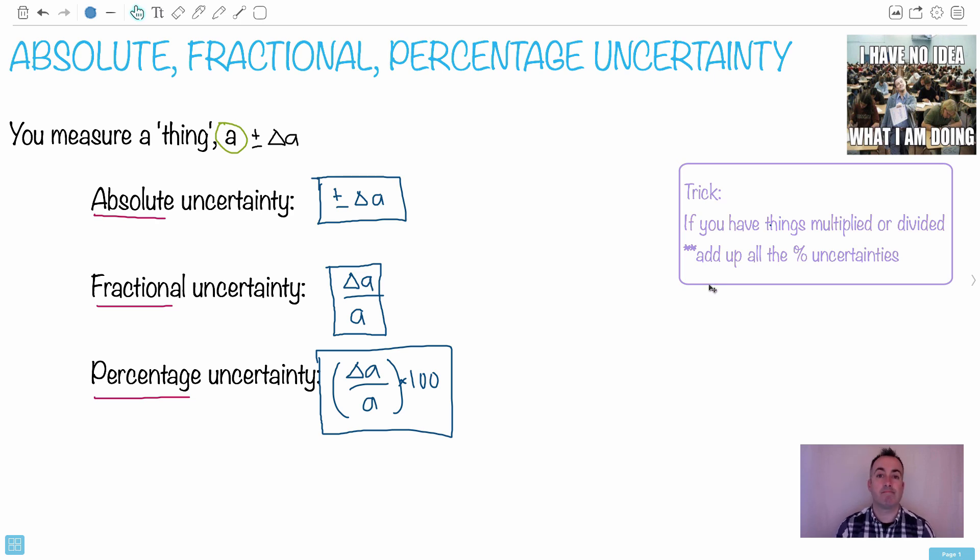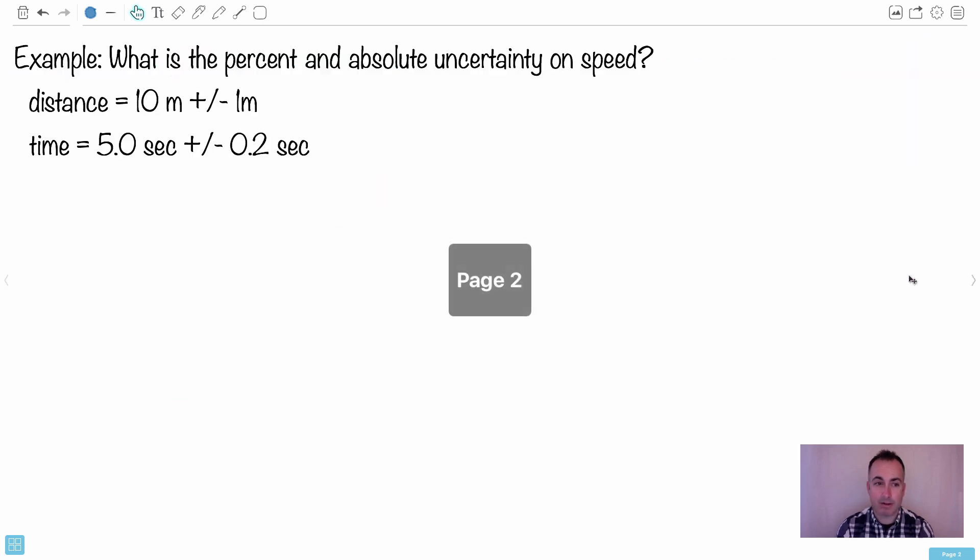So in this case, if you're measuring a distance and a time, let's just say, and you want to find the velocity, even though the velocity is the distance divided by time, or displacement divided by time if we're going to be really accurate about it, then what you can do is you can just find the percent uncertainties for each of them. You can find the percent uncertainty for distance and the percent uncertainty for time. And even though the way you calculate velocity is by doing the distance divided by time, if you have things multiplied or divided, then all you have to do is just add up the percent uncertainties and you'll get the uncertainty on the total value. And to make it make more sense, I'm going to use that actual example.